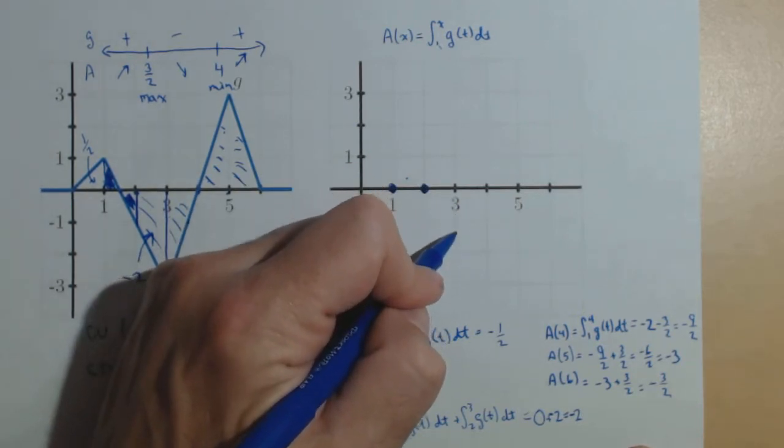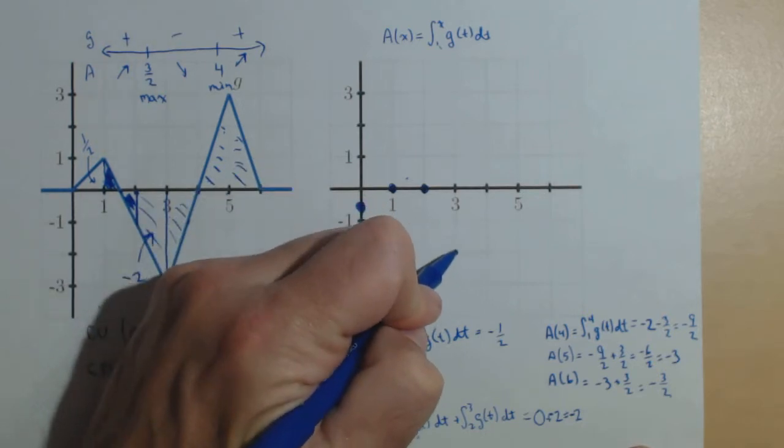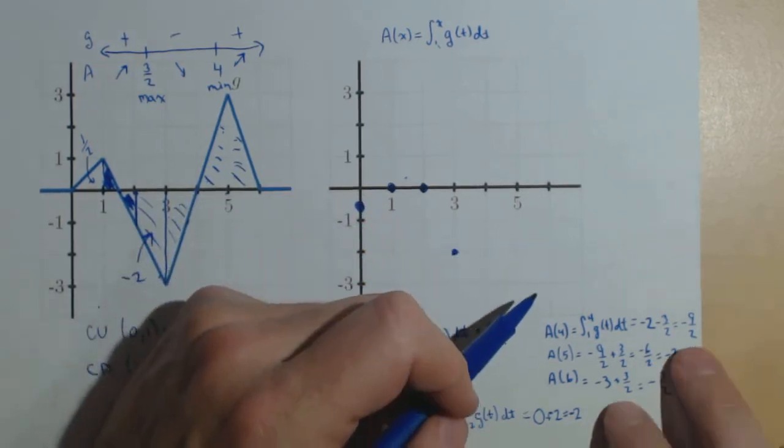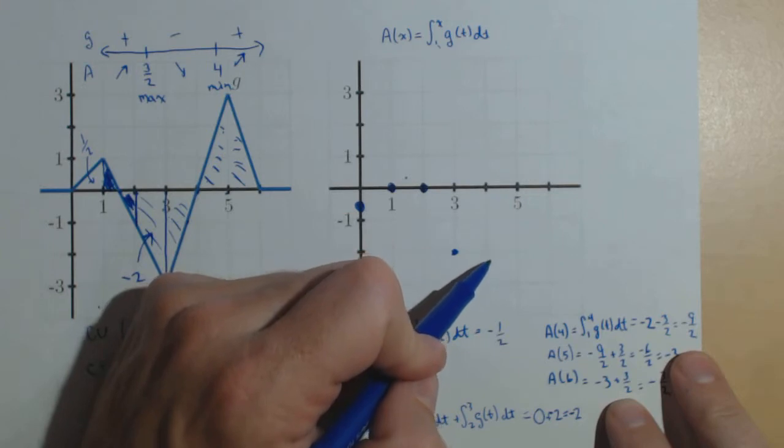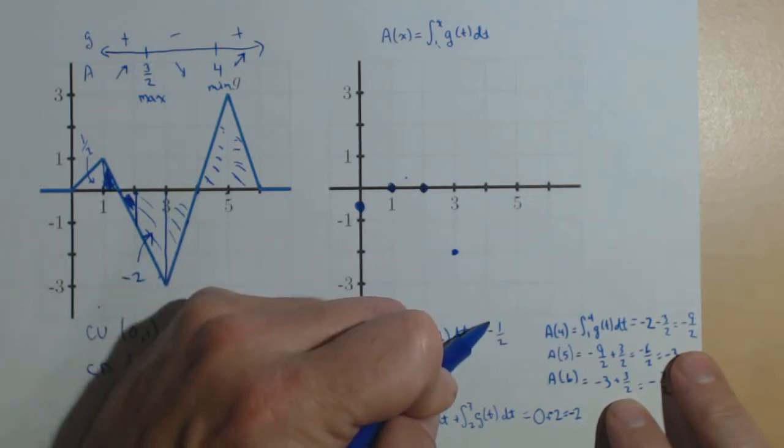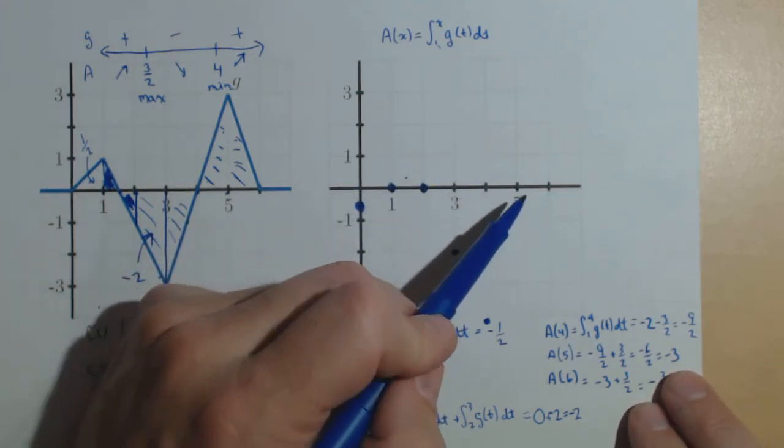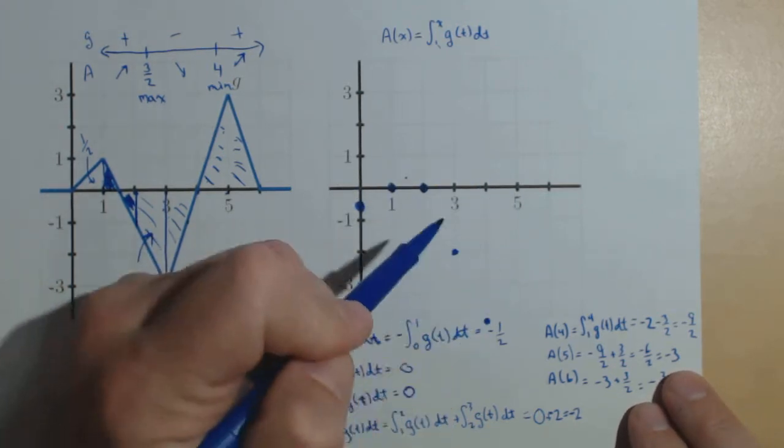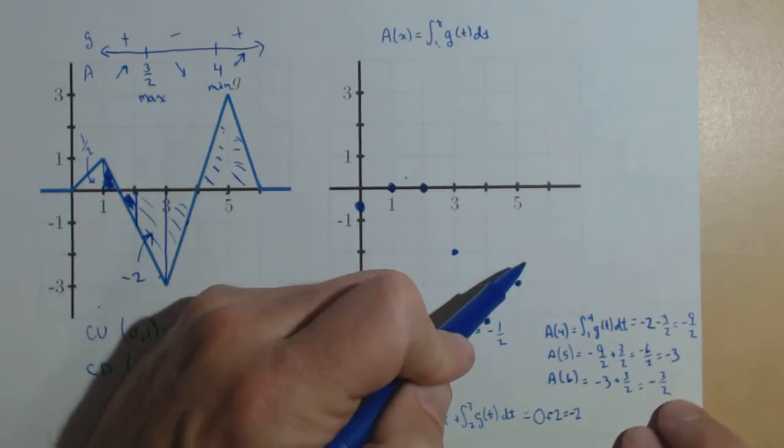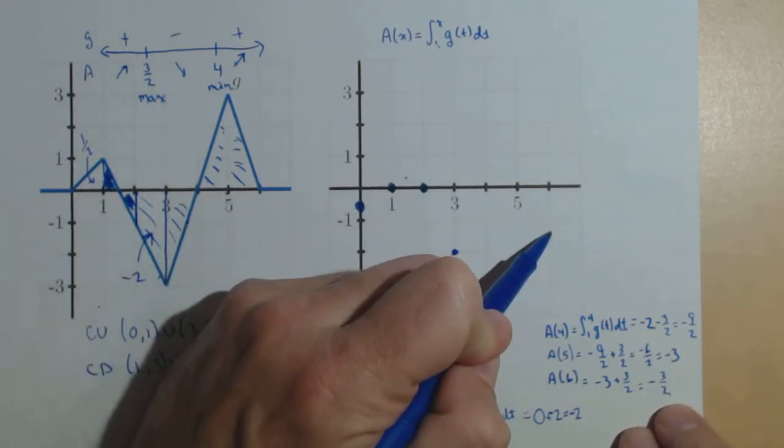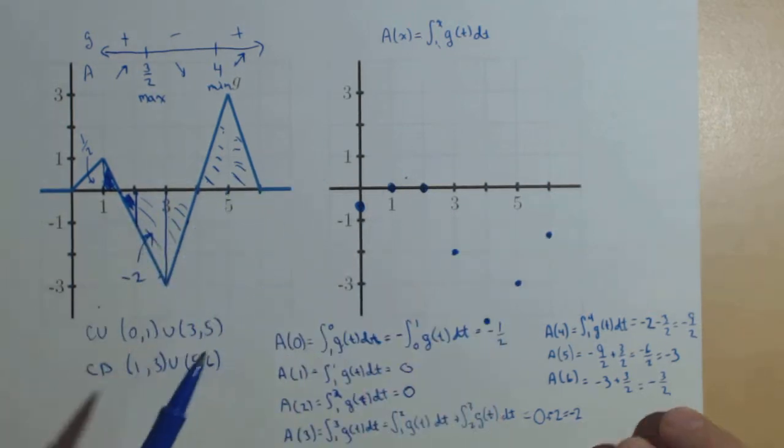A of 3 drops way down to negative 2. A of 4 goes all the way down to negative 9 halves. So, it's even off our chart here. I'm just going to put a point there. A of 5 is negative 3. So, right here. And finally, A of 6 is negative 1 and 1 half. So, there's our plot.